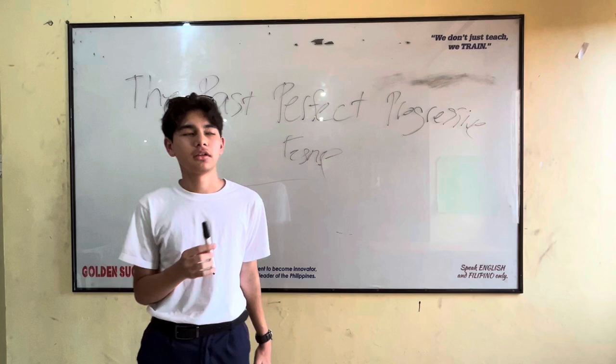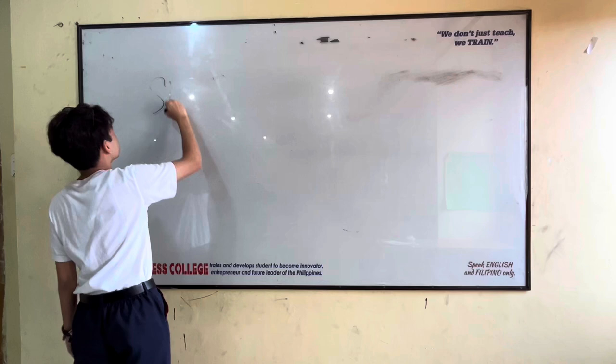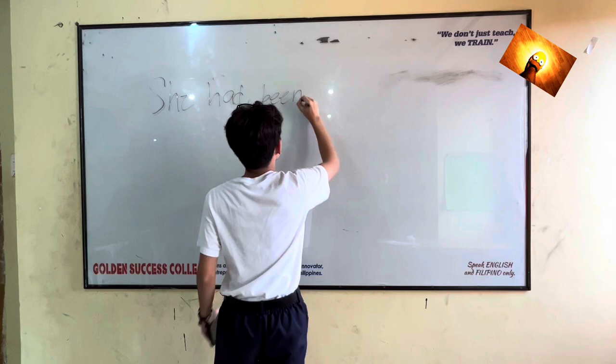Now we should look at two examples. One of them will be using the past perfect progressive tense, and one of them will be using the past progressive tense.